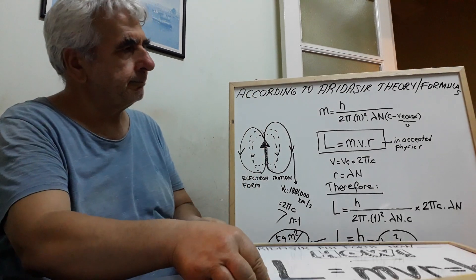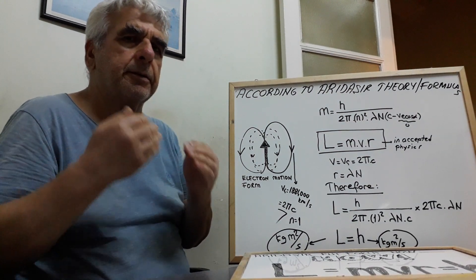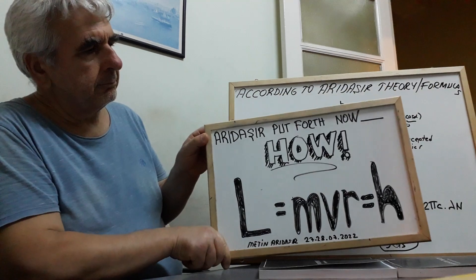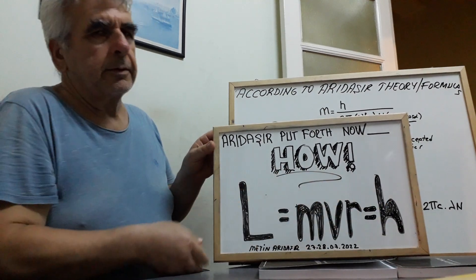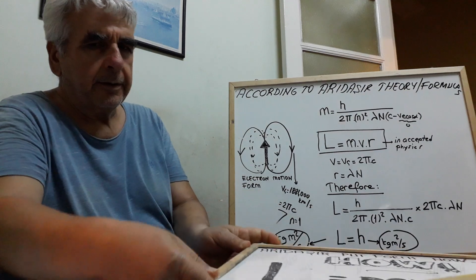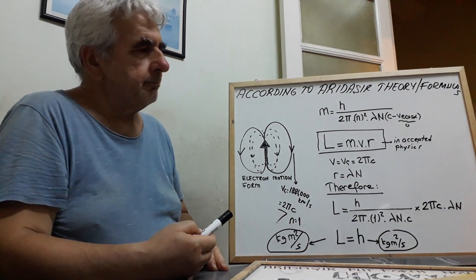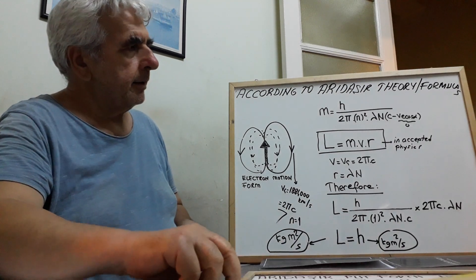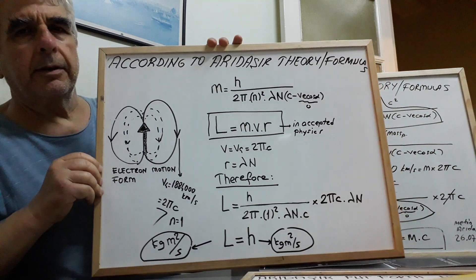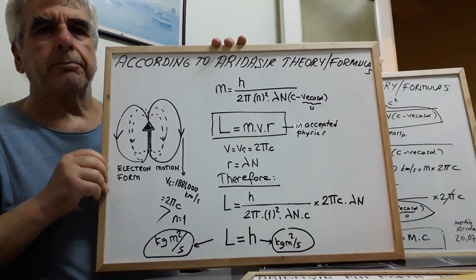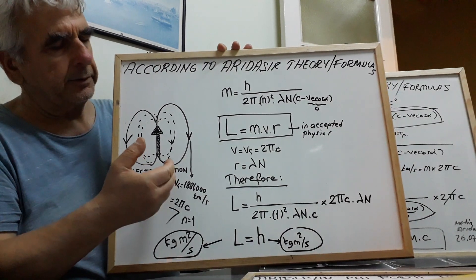How? Next, I will explain in detail. Angular momentum is equal to Planck constant, and their units are the same. Here you can directly see how I deduced that Planck constant is the angular momentum of the electron motion form.